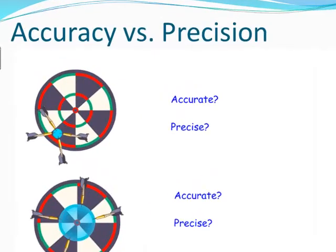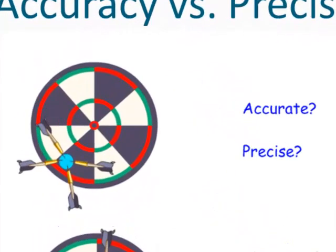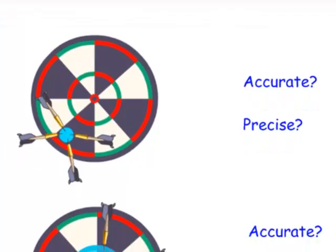Looking at the first dart board at the top left, we decide: is it accurate, precise, neither, or both? All four darts are very close to each other — that matches our definition of precision. So this person is throwing very precisely. However, they missed the target; the circle described by the dart tips does not include the bullseye. So it's not accurate, but it is precise.